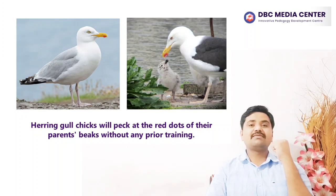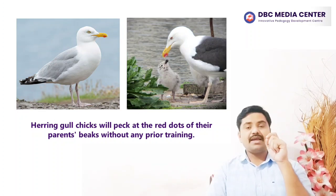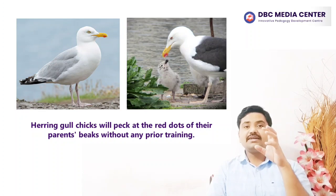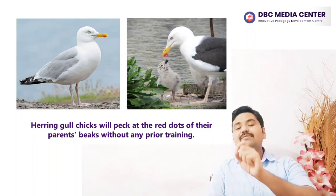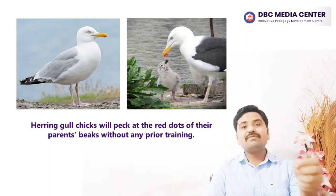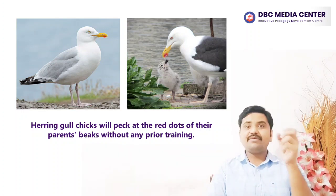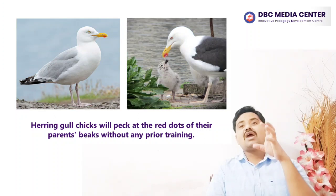As shown in the photograph, gull chicks feed from their parent, which has a red spot on its beak. This tapping behavior is innate or genetically programmed. Herring gull chicks will peck at the red dot on their parent's beak without any prior training. In fact, a baby herring gull can be triggered by a yellow stick with a red dot — it will peck at the stick just as eagerly as it would at the parent's beak. Innate behavior tends to be very predictable and is often performed in a very similar way by all members of the species.